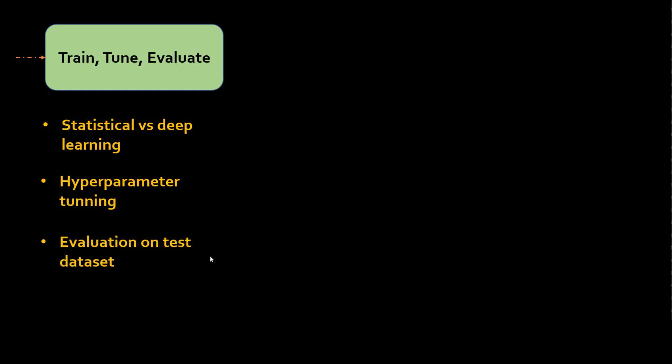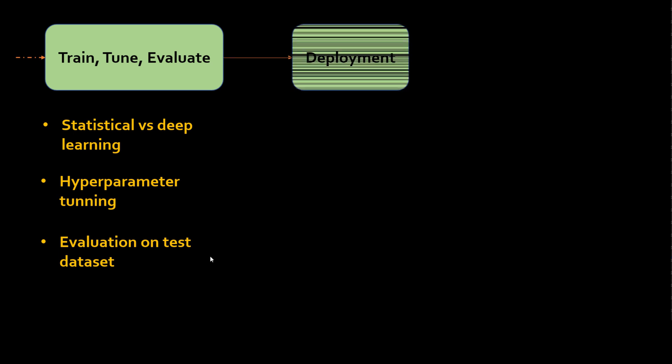Data scientists know which model to use in what circumstances. For statistical machine learning classification, options include random forest, decision tree, and logistic regression. They will try multiple methods, perform hyperparameter tuning, use Grid Search CV and cross-validation to find the best-performing model. That model is then evaluated on a test dataset — data not used during training. Once confirmed, the model is exported to a pickle file or similar format and deployed.